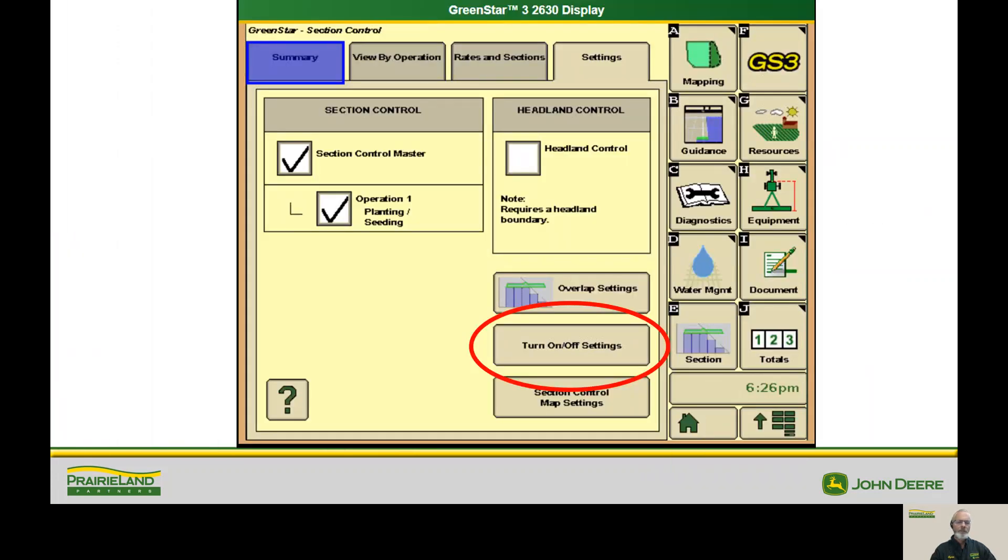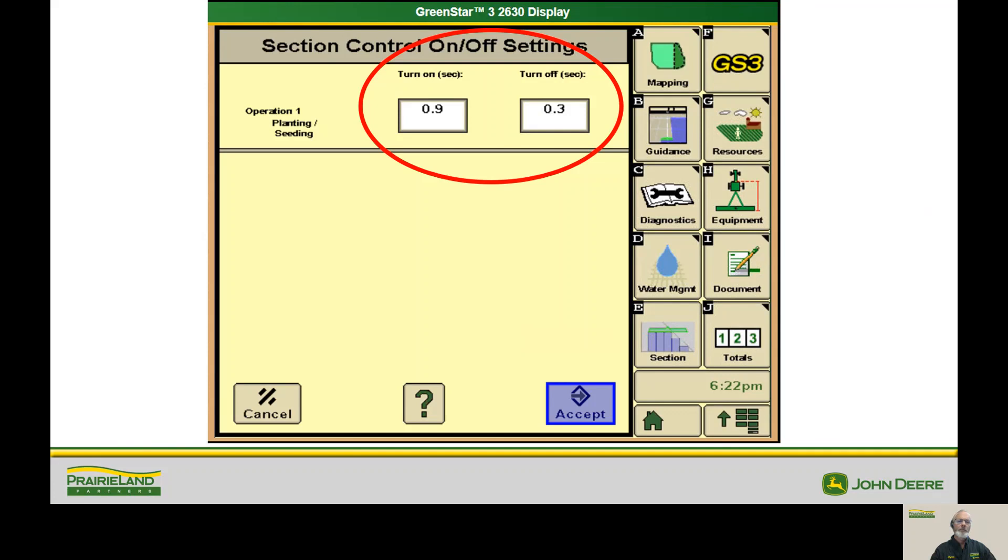Next thing that comes into play, and these measurements that we did earlier are really important because of section control adjustments. So the first thing let's do, let's talk about the turn off and turn on times. This is basically the amount of time it takes for the planter to release the seed and it hits the ground, or the turn off amount of time it takes to stop. So it's going to take a little bit longer to turn on than turn off, but it's not going to be a lot of amount.